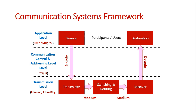This framework outlines the pathway of a message: it originates at a source, gets encoded before transmission, gets transmitted from one person's system through switches and routers, and then gets picked up by another person's system. It knows the way to go based on IP and MAC addresses. Once it reaches the receiver, the message is decoded back into readable form so that participants and users at the application level can read it at the destination.